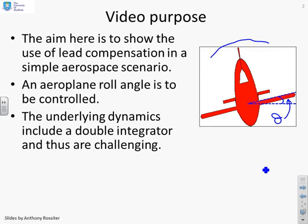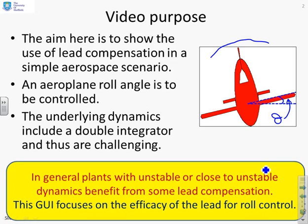So you're not straight and level, you're rolled at an angle theta. Now the underlying dynamics include a double integrator and thus are challenging. So in general, plants with unstable or close to unstable dynamics benefit from some lead compensation.